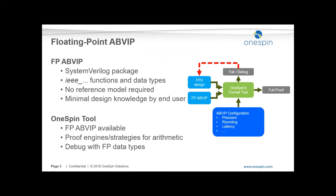On the right of the slide you can see the overall structure. In the center you have the OneSpin formal tool, which takes as input the floating point unit design, to which we instantiate the verification IP. The user needs to parameterize the properties, which come from the IP delivered as a template — this is quite intuitive and requires less knowledge of hardware implementation. If you get a proof you get the full proof, and if there is a debug you go and debug with the debugger integration.